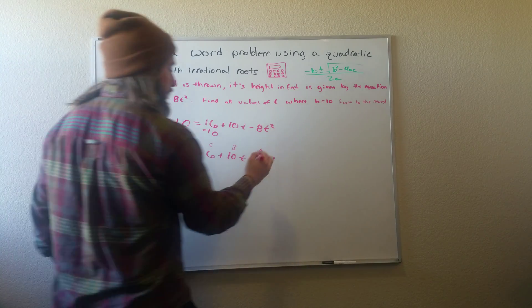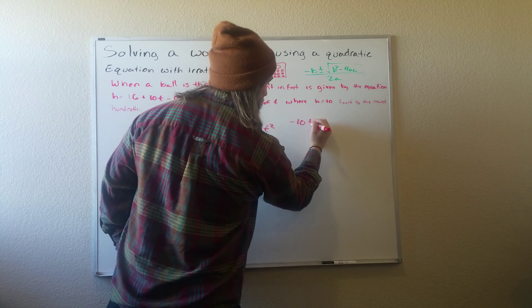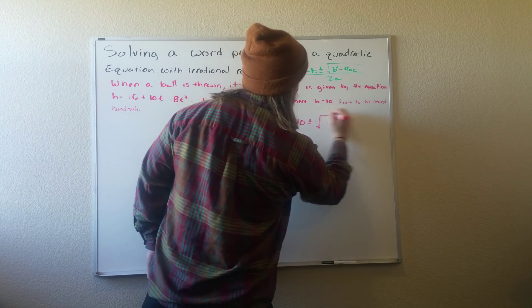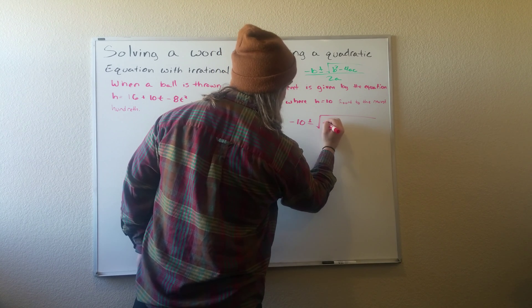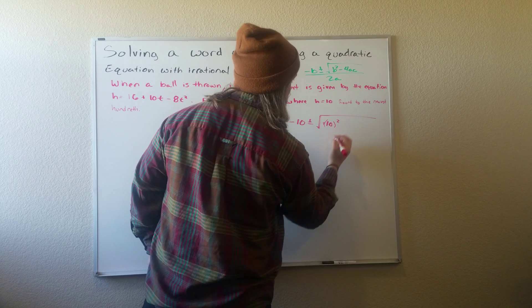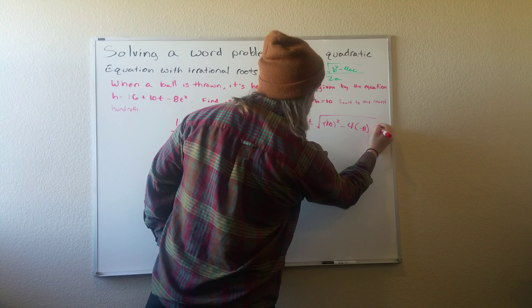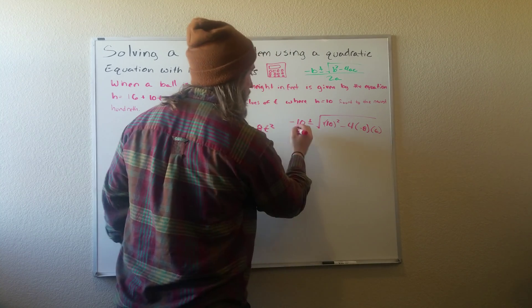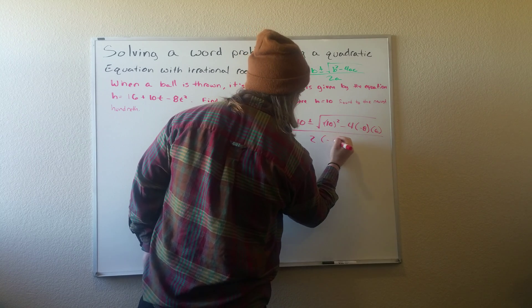So if we're plugging it into this equation, we'll write negative 10 plus or minus and then square root of positive 10 squared minus 4 times negative 8 times 6. And then we'll put that over 2 times negative 8.